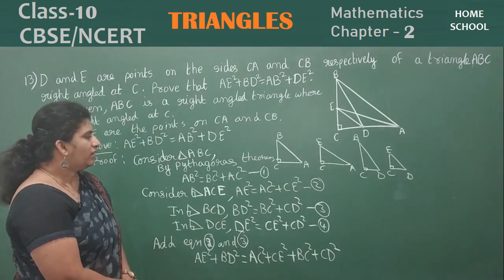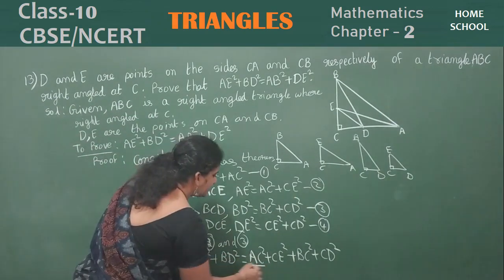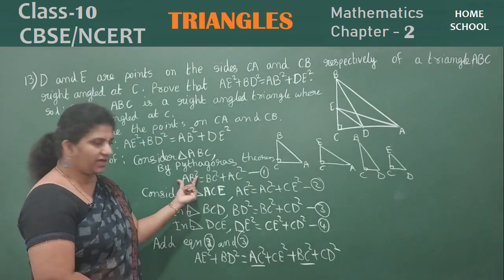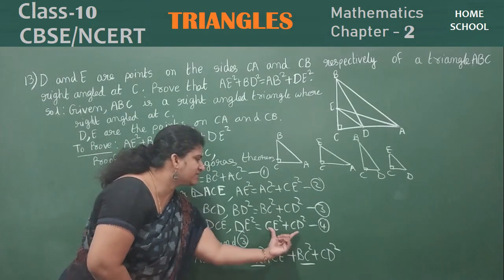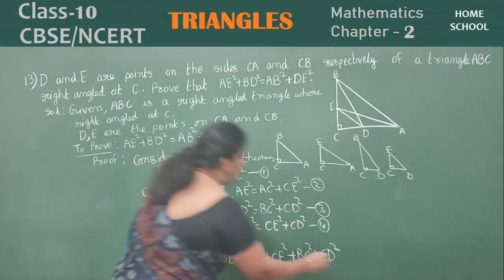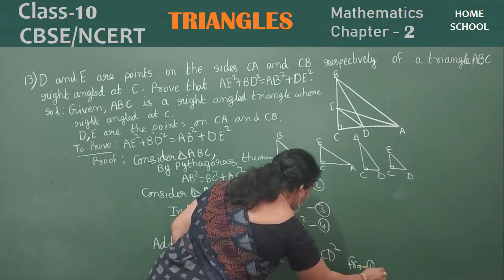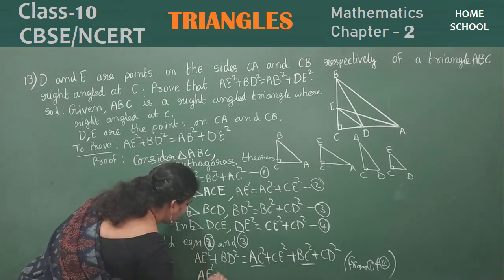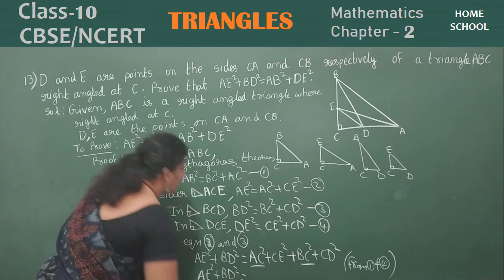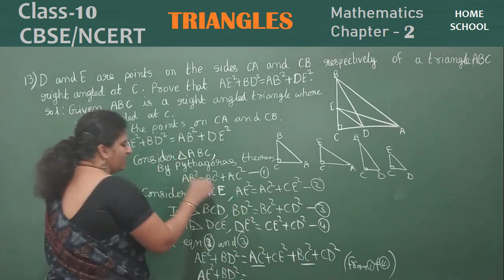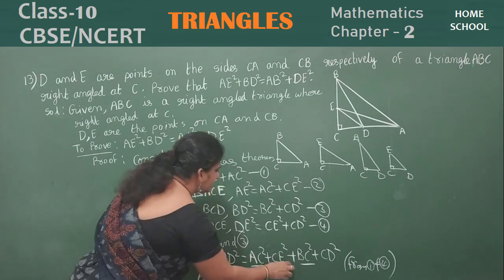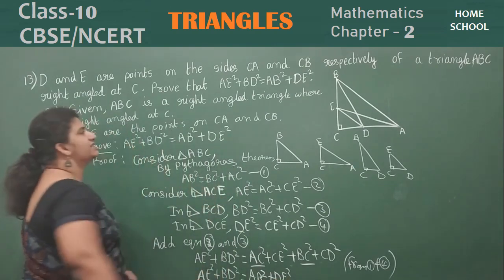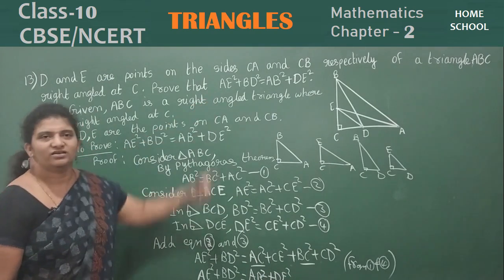Observe: AC² + BC² = AB² (from equation 1), and CE² + CD² = DE² (by Pythagoras on triangle DCE). Therefore AE² + BD² = AB² + DE². Hence it is proved.